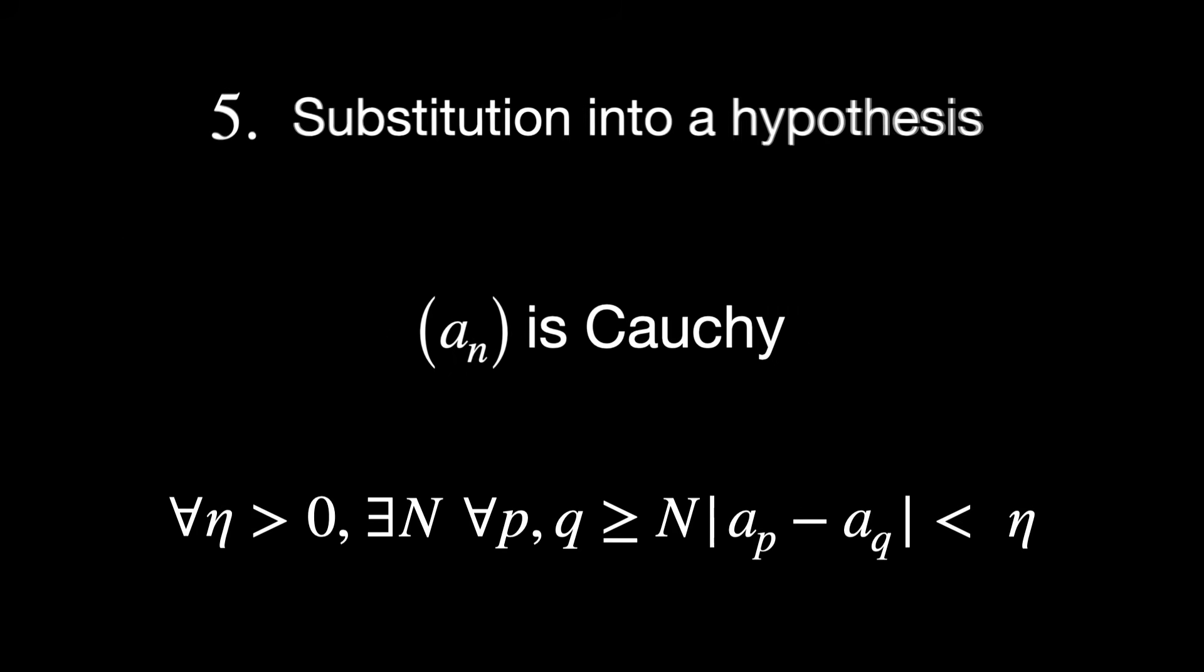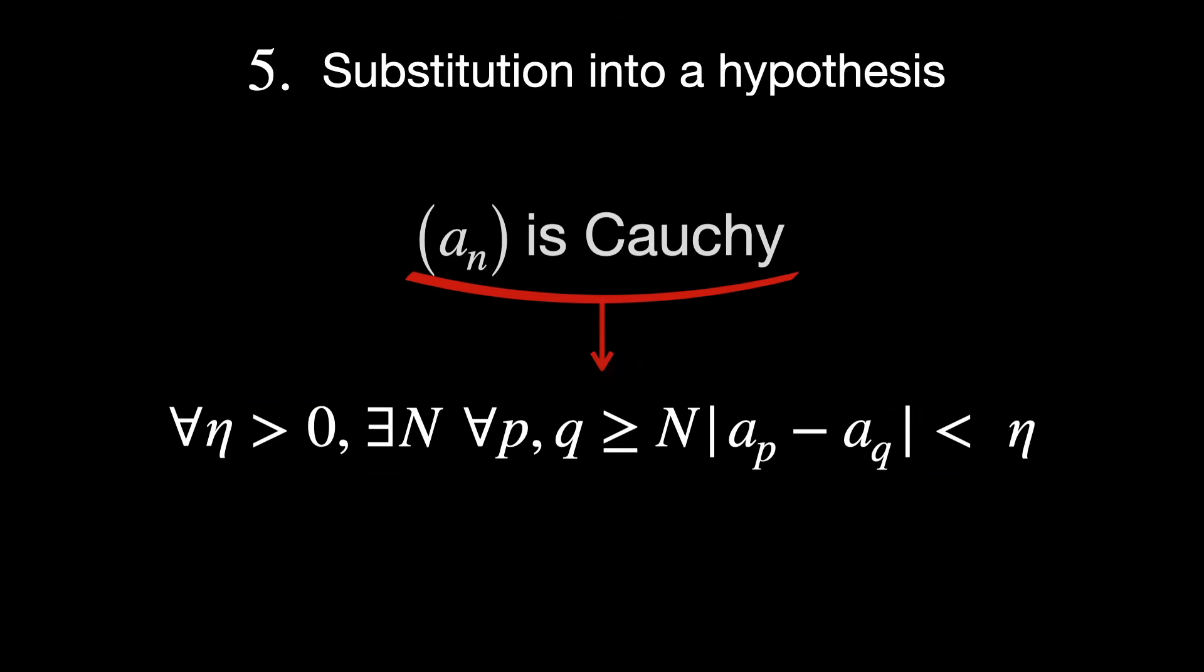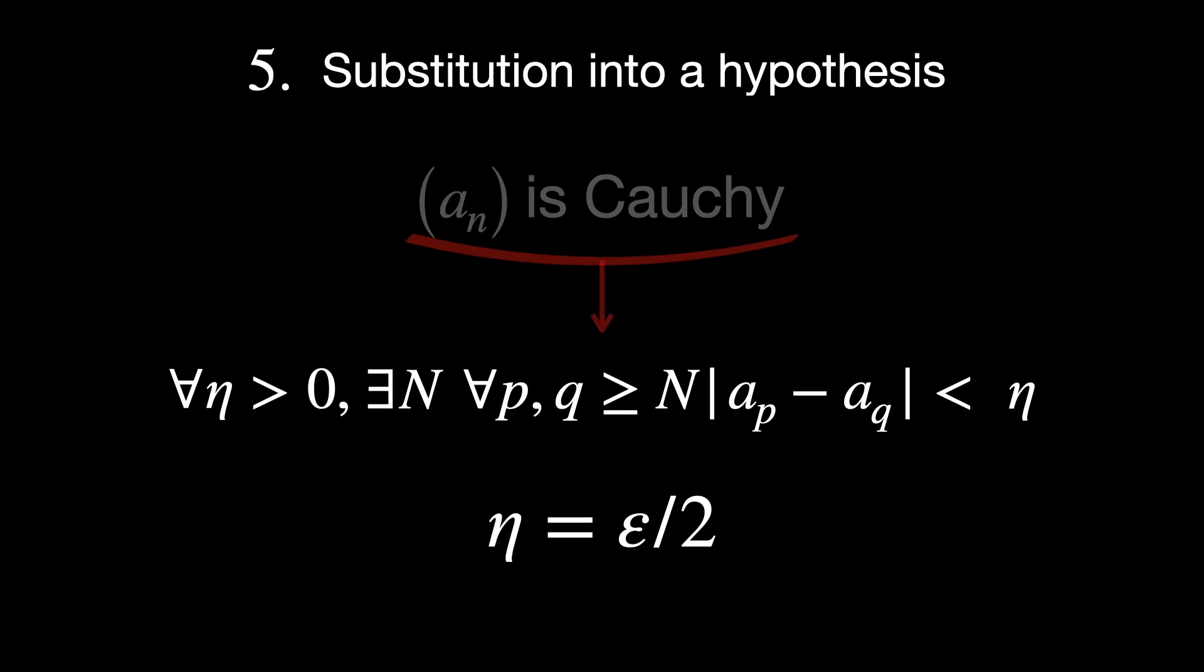Given something like for all eta greater than 0, there exists a number n such that for all p and q greater than or equal to n, the difference |a_p - a_q| must be less than eta. You can choose a specific value, for example, eta equals epsilon over 2 and substitute it in.